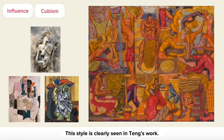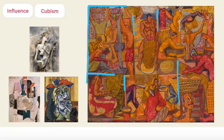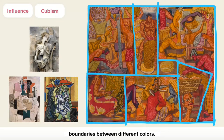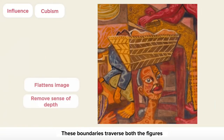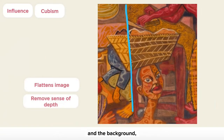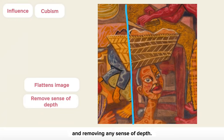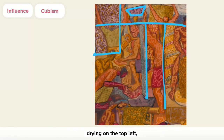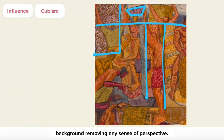This style is clearly seen in Ting's work. The painting is segmented into many rectangles, demarcated by the linear boundaries between different colors. These boundaries traverse both the figures and the background, thereby flattening the image and removing any sense of depth. These flat planes are further repeated by the rectangular shapes of batik cloth drying on the top left, as though their silhouettes have permeated the background, removing any sense of perspective.